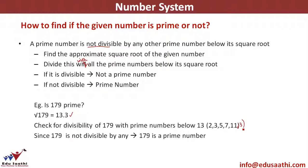A prime number has exactly two factors: one and the number itself. It is not divisible by any other number below its square root. So we find the approximate square root and try to divide the number with all the prime numbers below that approximate square root. If it is not divisible by any of them, it is a prime number.